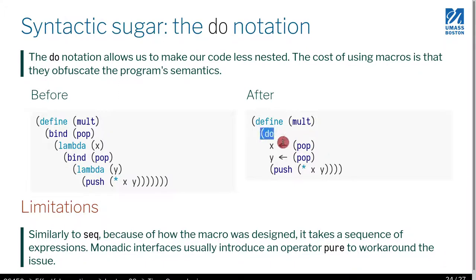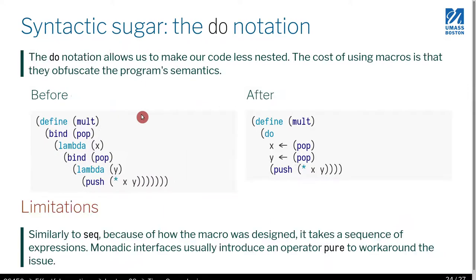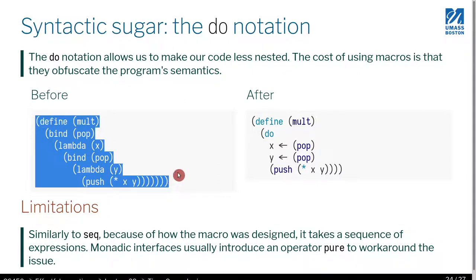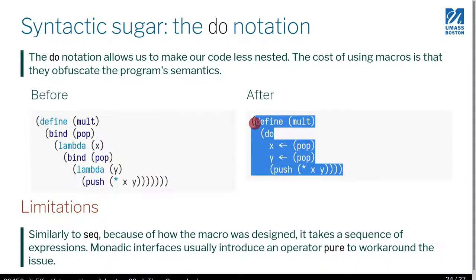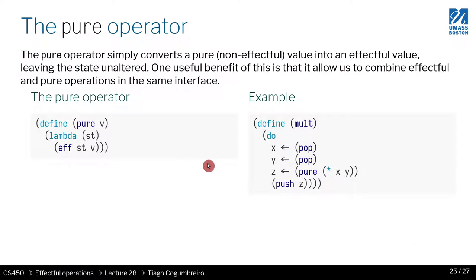We do 'do', then we write the variable we want, and then we use this little arrow — I just wanted to use an arrow. As you can see here, here's the arrow. For instance, the multiplication, rather than looking like the left-hand side, after using the macro becomes nice and small like this — nice and flat. There's not this weird confusing thing with the lambdas.